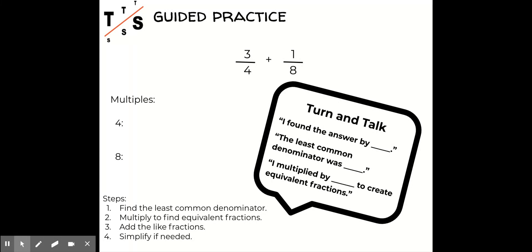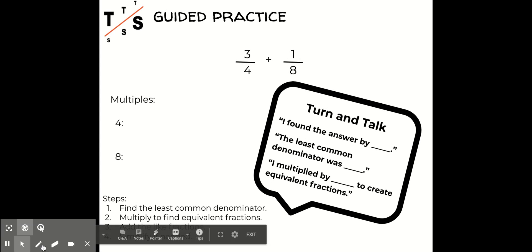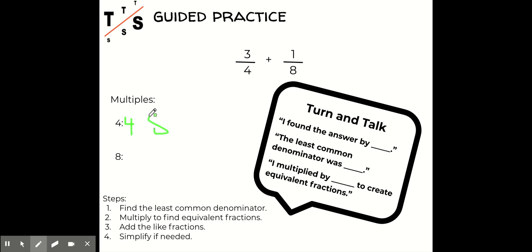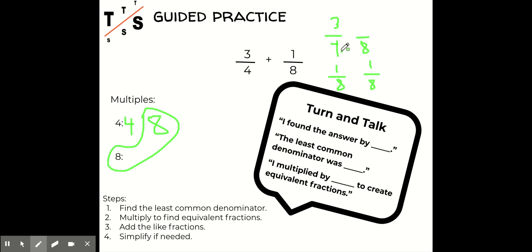We're going to try: three fourths plus one eighth. I'll go ahead and write out my multiples. Four times one is four, four times two is eight — I can stop right there because four and eight have eight in common. So I'm going to write three fourths and one eighth. I can keep one eighth the same and just change this four to an eight. How did I get from four to eight? I multiplied by two. Whatever we do to the bottom, we do to the top: three times two is six. Now I can add: six plus one is seven, and I keep the same denominator eight.